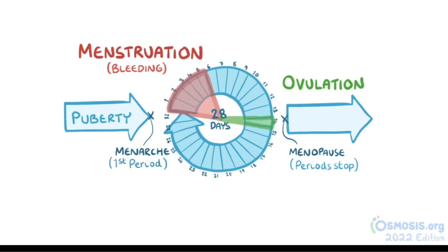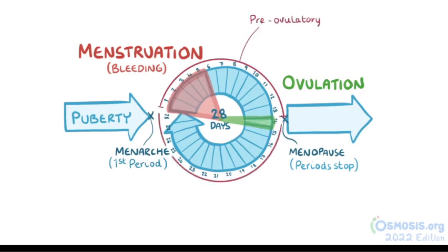So for an average 28-day menstrual cycle, this means that there are usually 14 days leading up to ovulation — the pre-ovulatory phase — and 14 days following ovulation, the post-ovulatory phase. During these two phases, the ovaries and the endometrium each undergo their own set of changes, which are separate but related.